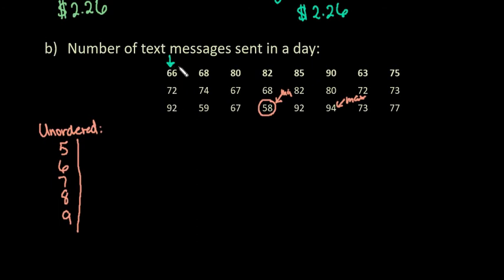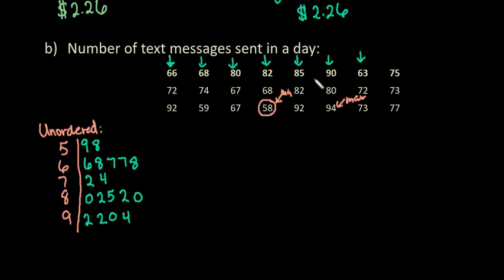For the 60 I would have a 6, the 70s a 2, the 90s I would put a 2. Going to the next column I have 68, 74, 59. Now we have 80, 67, 67. Then 82, 68, 58, 85, 82, 82, 92, 90, 80, 94, 63, 72, 73, and then our last one is 75, 73, and 77.